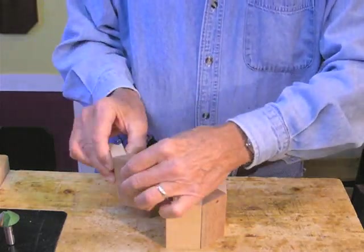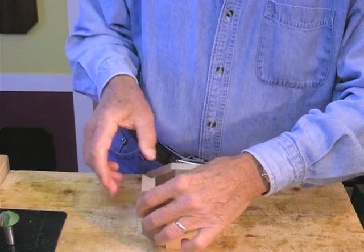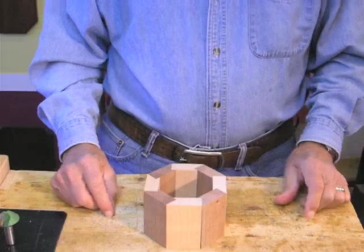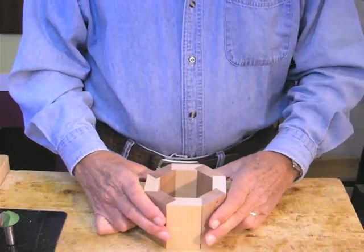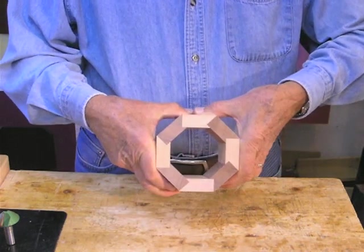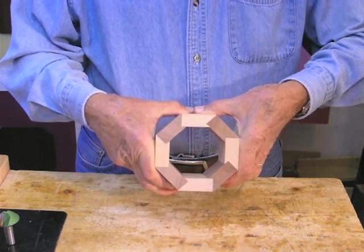When you've got 8 of these, as I've assembled here, they form the 8-sided shape you're going after, and it's in very tight, rigid form. It's easy to glue and very strong.